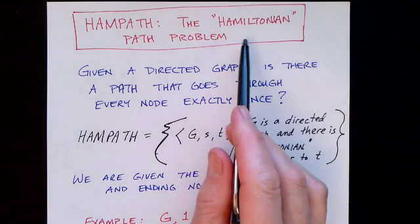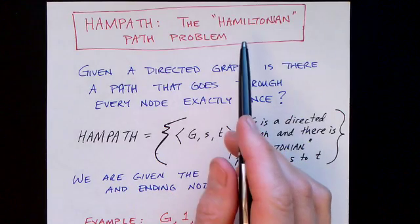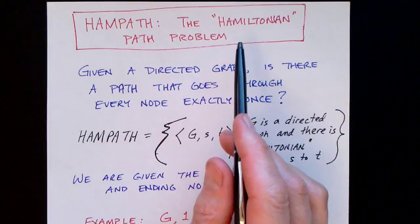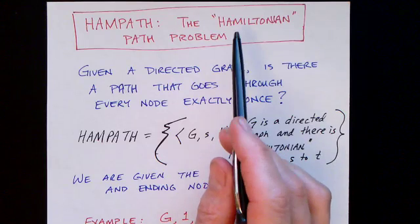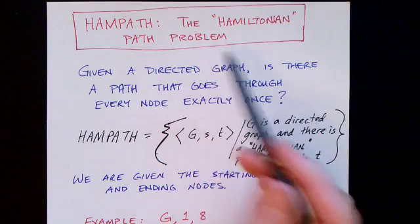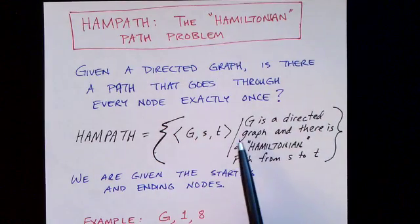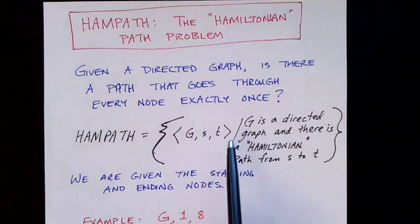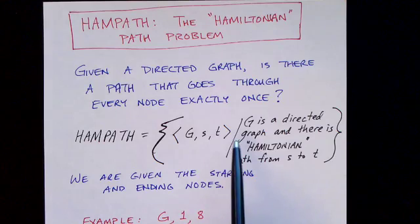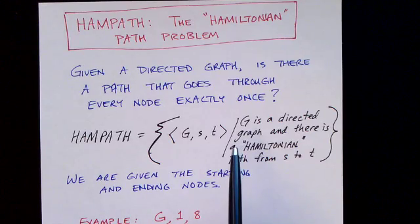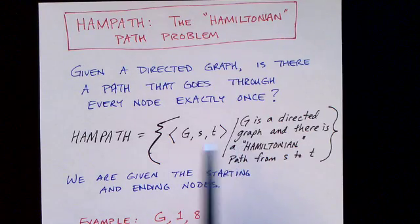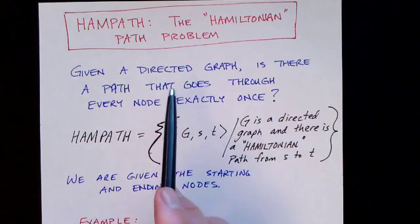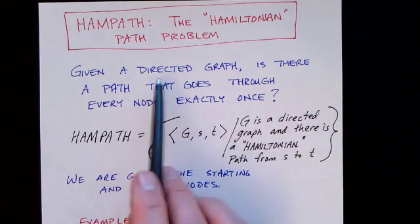Now let's look at a different problem. This is called the Hamiltonian path problem. It's very similar to the path problem we saw earlier, but even though it's superficially similar, we'll see that there's an important difference between these two problems. And that will lead us to a discussion of NP, a different complexity class from P.